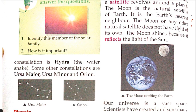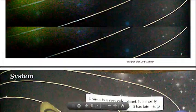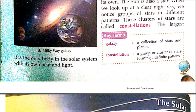You can see Ursa Major where the pointer is moving, and Orion just beside it. Key terms recap: a galaxy is a collection of stars and planets. In our case, the sun acts as the star and we have eight planets. A constellation is a group or cluster of stars forming a definite pattern.